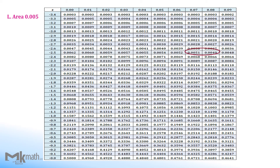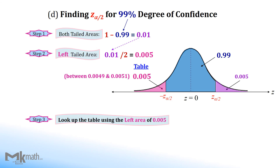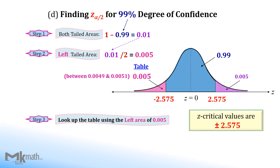We found two area values close to 0.005. Comparing the differences, we cannot use either one since the differences are the same, so we take the halfway between those values. Go straight to the left to read the first two digits of the z-score, and go up halfway between the two values to read the second and third decimal places. So the z-score that corresponds to the left cumulative area 0.005 is negative 2.575. Since we found the left z-critical value, we just change the sign to get the positive z-critical value. Therefore, z-critical values for the 99% confidence level are ±2.575.